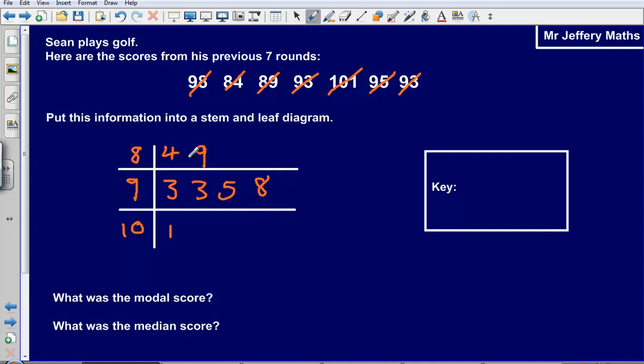Next up, the key. Well, again, I just usually select the first number and say that that is 8 and then that line there going down the middle and 4 is equivalent to 84.